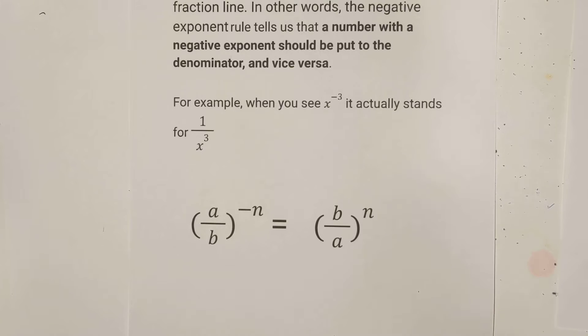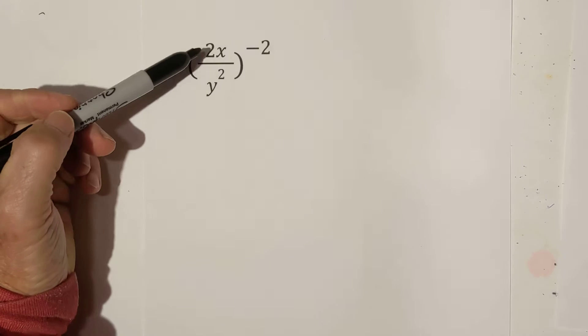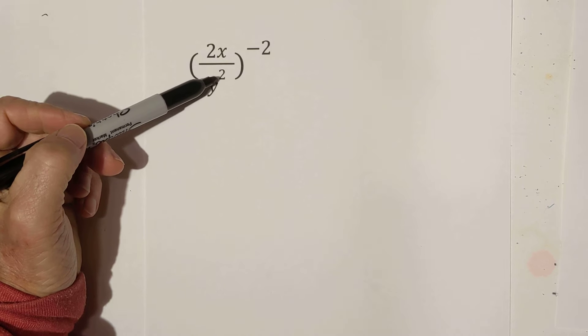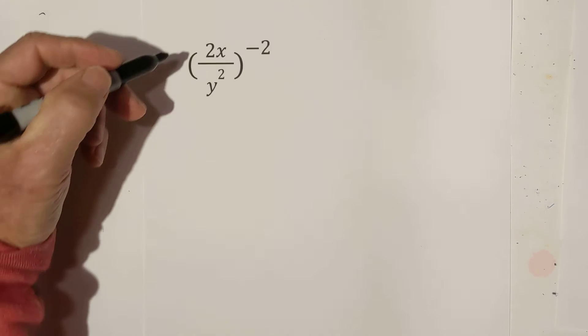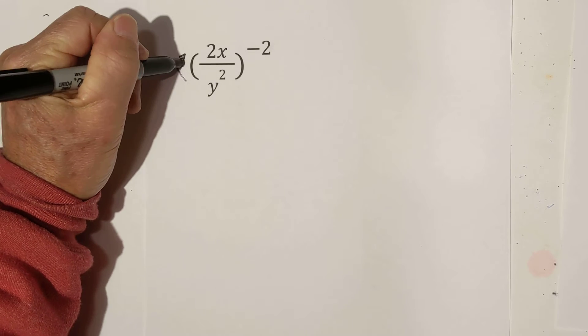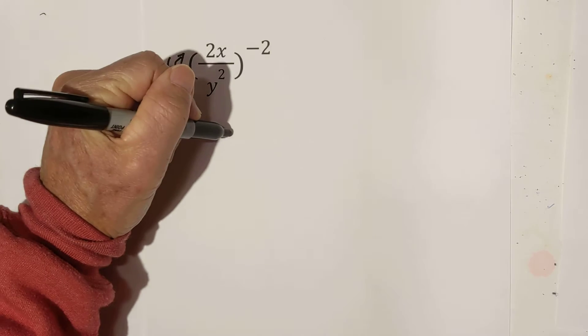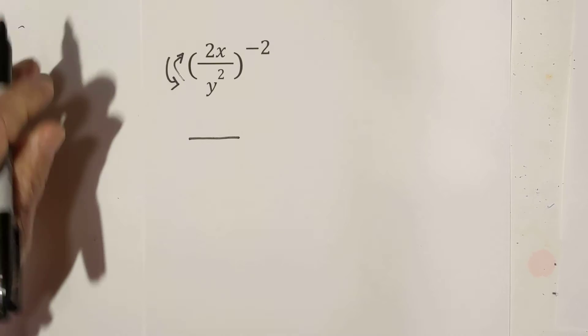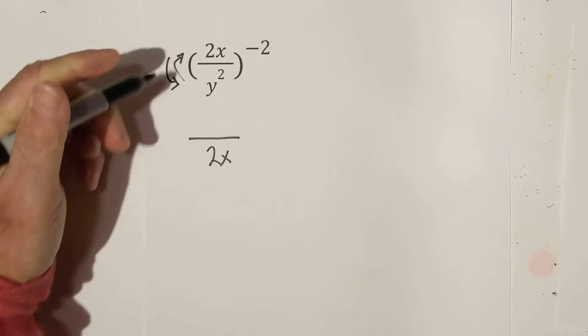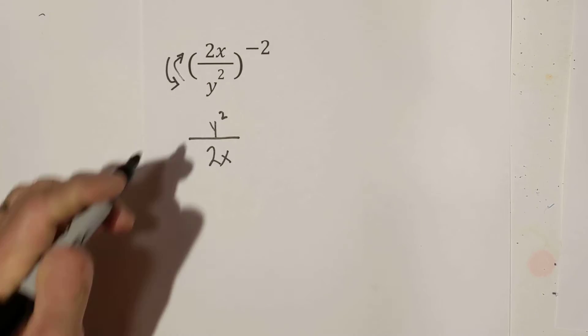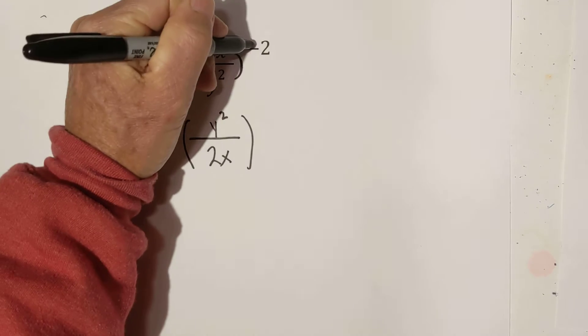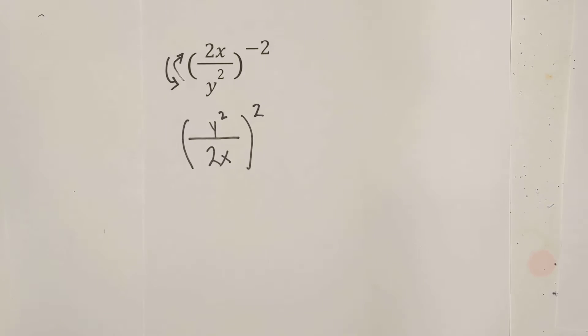So let's work some examples. Okay, so now we have 2x over y squared to the negative squared, or negative 2. So what we're going to do is we're going to call it the flip-flop. Okay, I know that's not a math term. So we have now 2 over x is in the bottom, and y over squared is here. And this now becomes a positive 2.